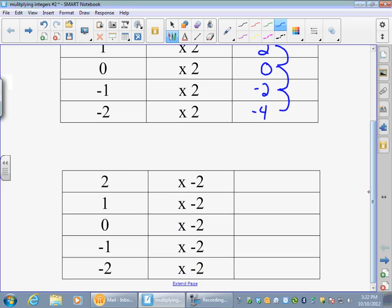So on to the second chart. Again, we have two times negative two. Well that's what we just had up here, and we know that's negative four. We know one times anything is that number, so that's got to be negative two. We know zero times anything is zero.